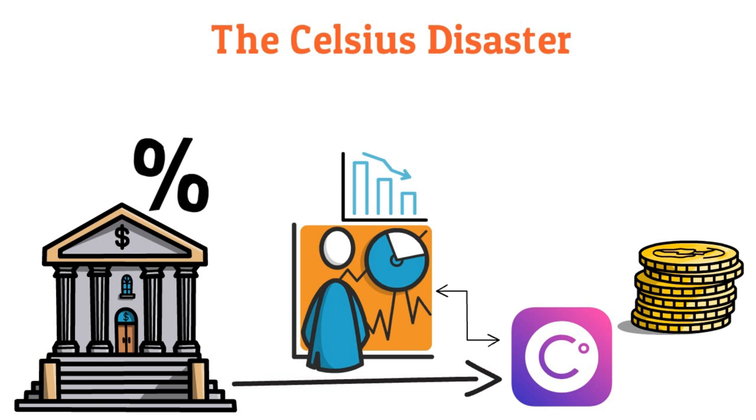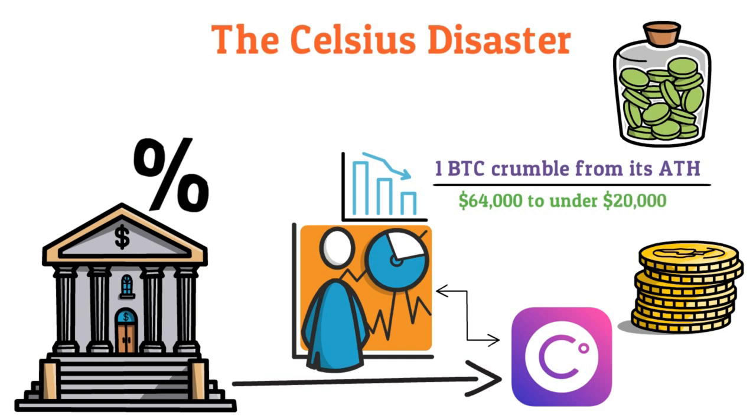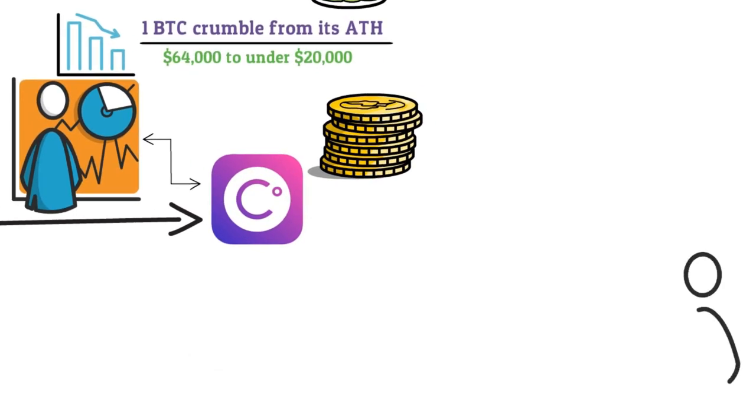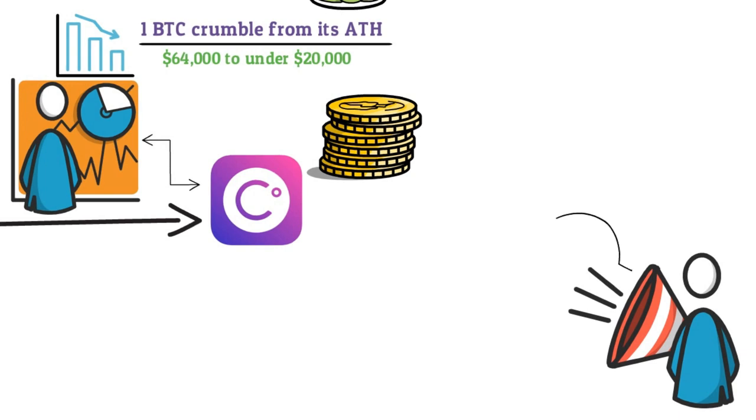Of course, fiat currencies are volatile, but not as volatile as crypto. And we did see one BTC crumble from its ATH of $64,000 to under $20,000 in a few months. This is something that cannot happen with fiat. So, in essence, a bullish crypto market will affect the business model of Celsius as well as a bearish market.